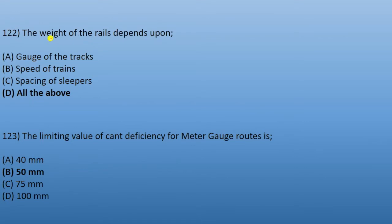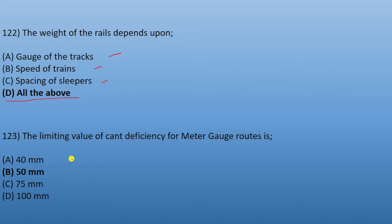Next: the weight of the rail depends upon the gauge of the track, the speed of the train, and the spacing of the sleepers — so all of the above. Next: the limiting value of cant deficiency for meter gauge routes is 50 mm.